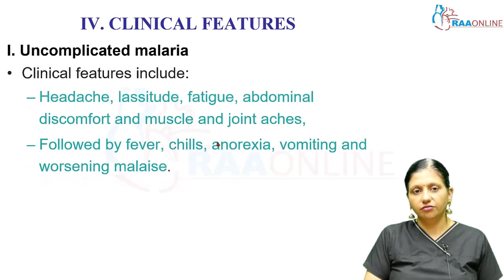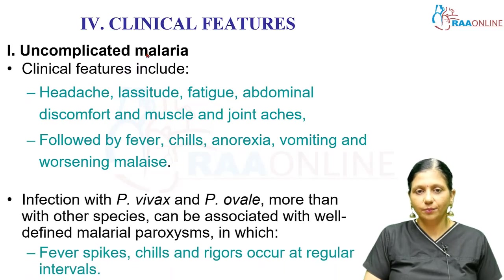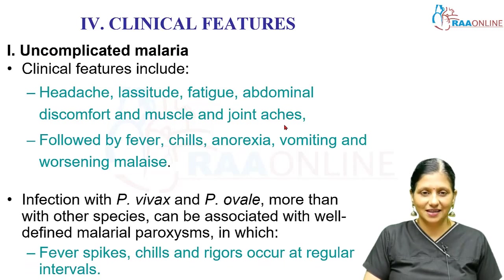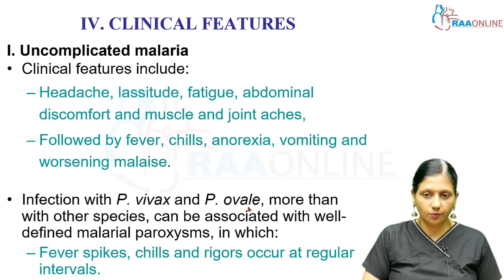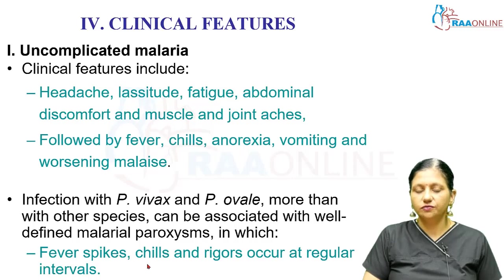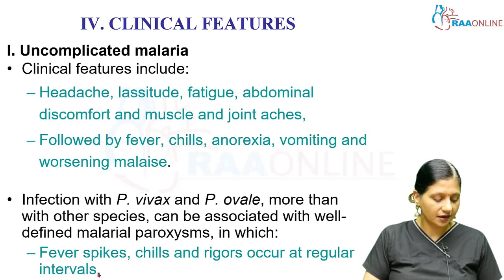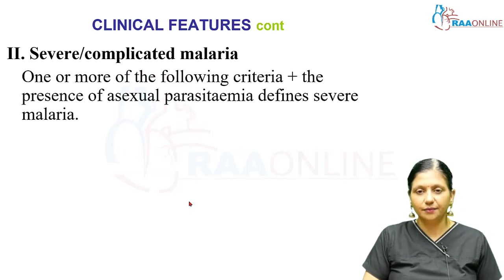Malaria can be uncomplicated or complicated. In uncomplicated malaria there is usually headache, lassitude, fatigue, abdominal discomfort, and muscle and joint pains, followed by fever, chills, vomiting, and worsening malaise. Patients infected with Plasmodium vivax and Plasmodium ovale can have well-defined malarial paroxysms — including fever spikes, chills, and rigors — which occur at regular intervals.